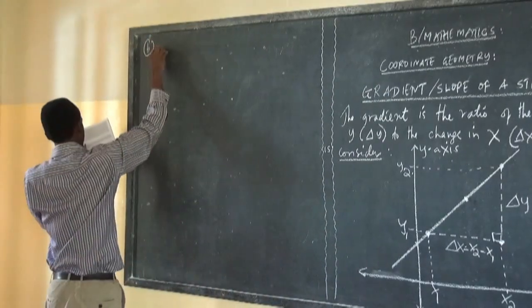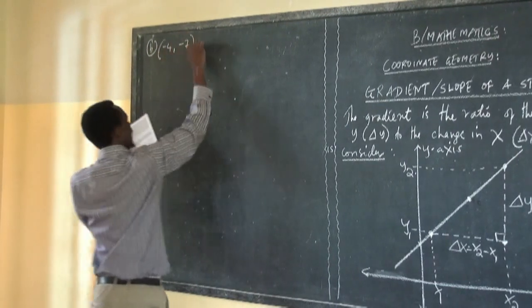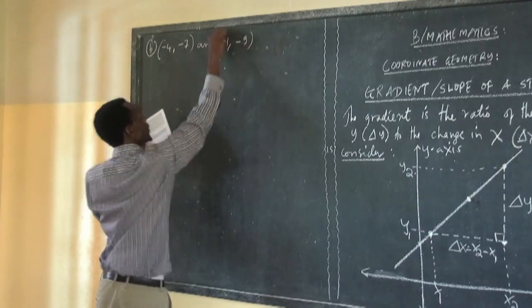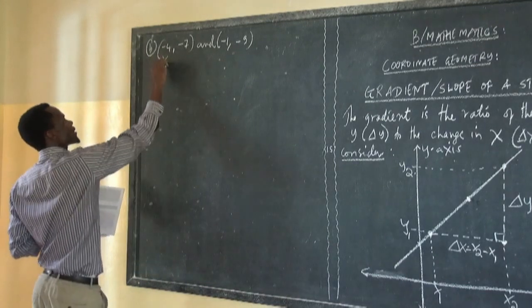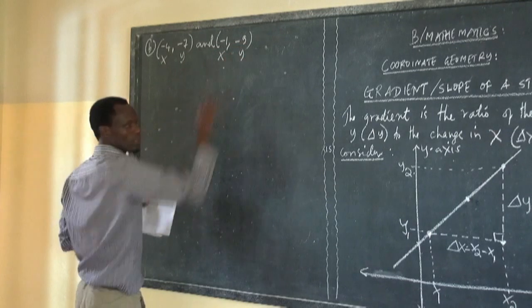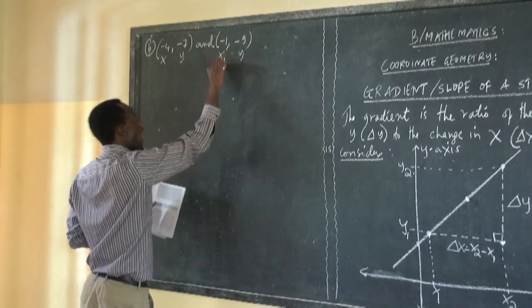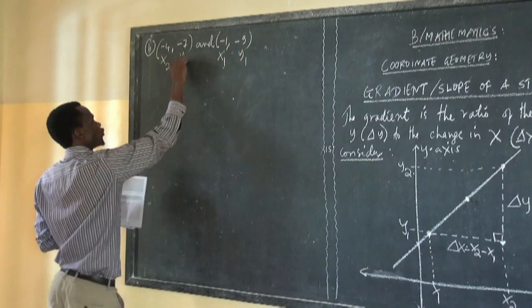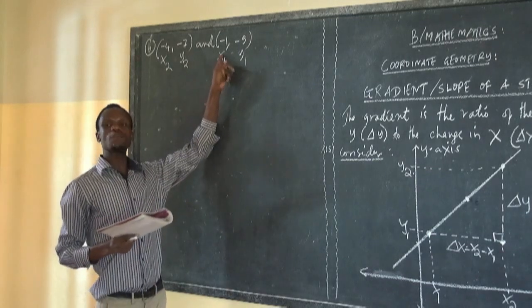For part B: we have (−4, −7) and (−1, −9). This is x and this is y for the first pair; this is x and this is y for the second pair. Let us say this is x1, this is x2, this is y1, this is y2.